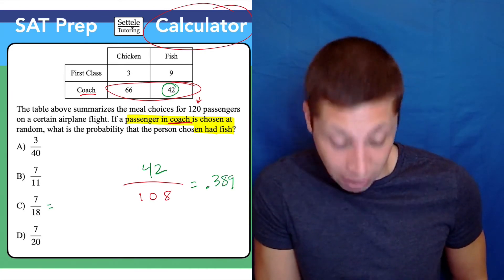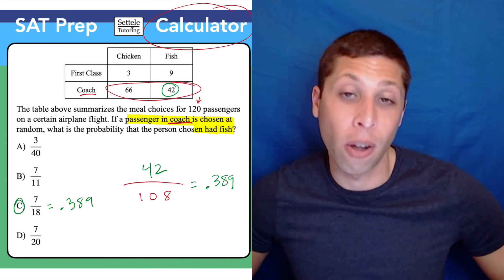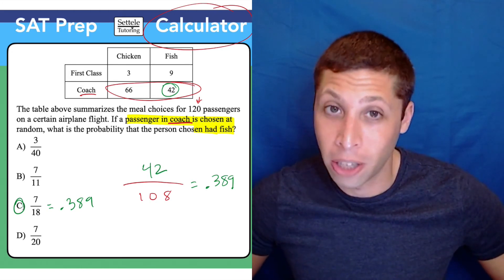You're going to get something like 0.389. And then if we type in each of these fractions, we will see that 0.389 is also the value of 7 divided by 18. So there you go.